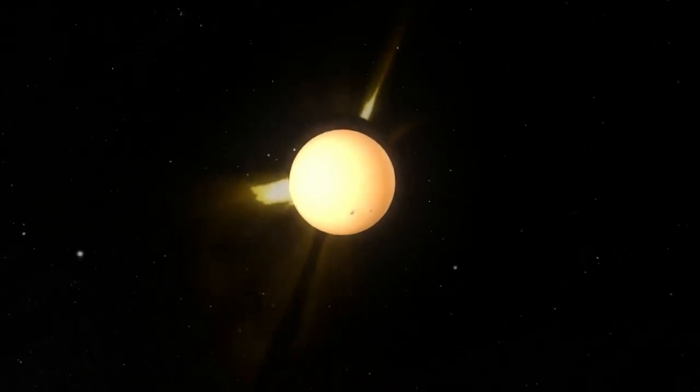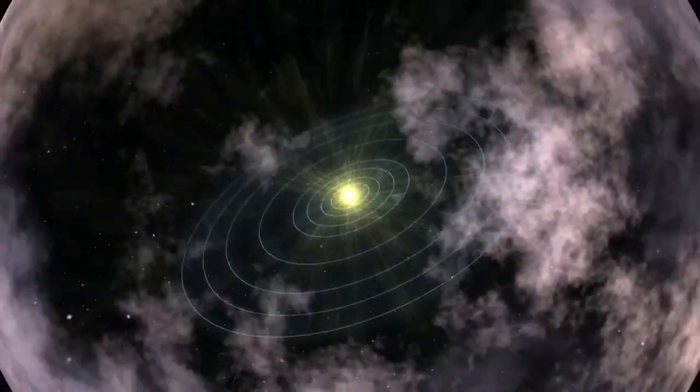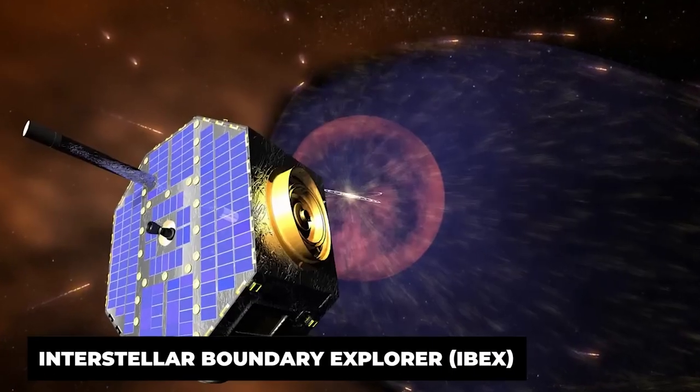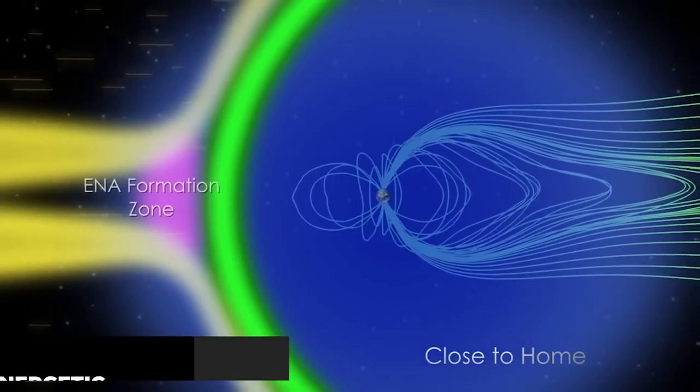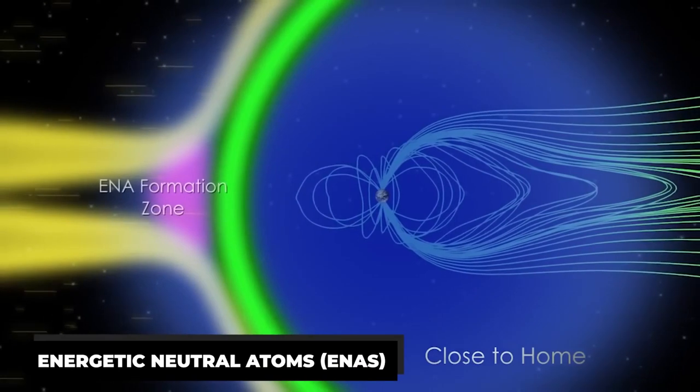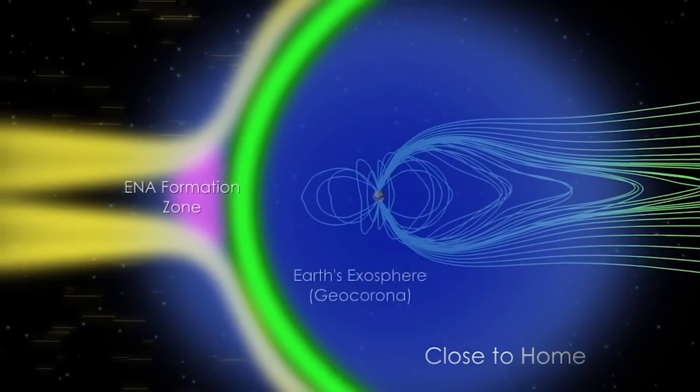Recent research on heliopause has produced data that has left scientists scratching their heads in confusion and amazement. In 2014, the interstellar boundary explorer IBEX observed the brightening of energetic neutral atoms, ENAs, that showed asymmetries in the heliopause that were inconsistent with earlier models.